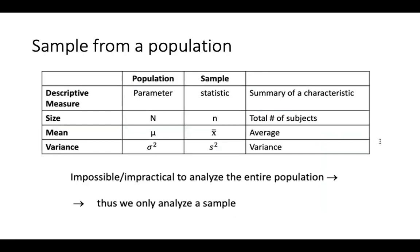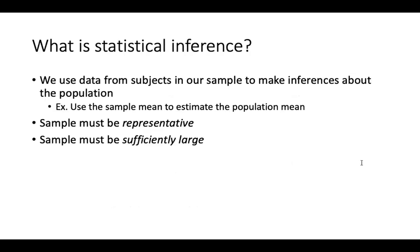Say we have a question like: what is the average age of a patient undergoing hemiarthroplasty in Ethiopia? Our population in that case would be every single patient in Ethiopia who had a hemi. But it's impossible, or perhaps impractical, to analyze all those patients. So we analyze a subset — a sample. This is what statistical inference is all about. We use data from subjects in our sample to make inferences about the population at large. We use the sample mean to estimate the population mean, but that requires that the sample must be representative and sufficiently large.